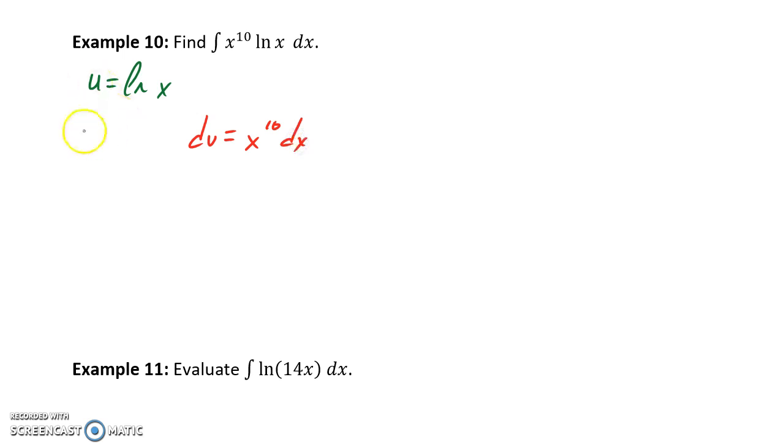Differentiating both sides of u equals ln x will give us du equals 1 over x dx. And then integrating both sides of our dv statement will give us v equals x to the 11th over 11.